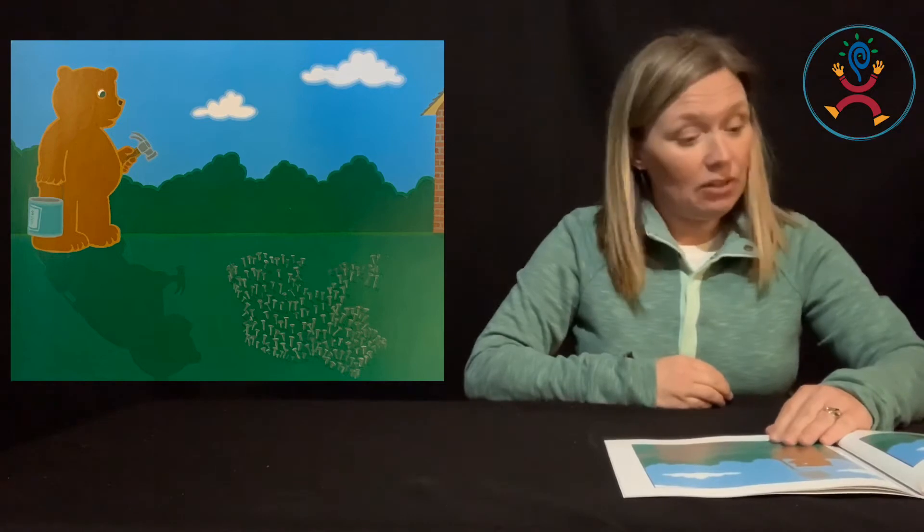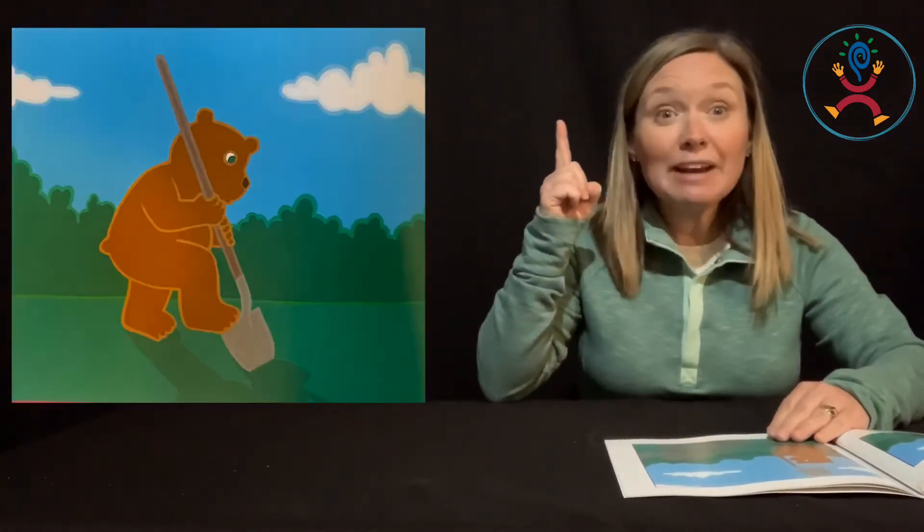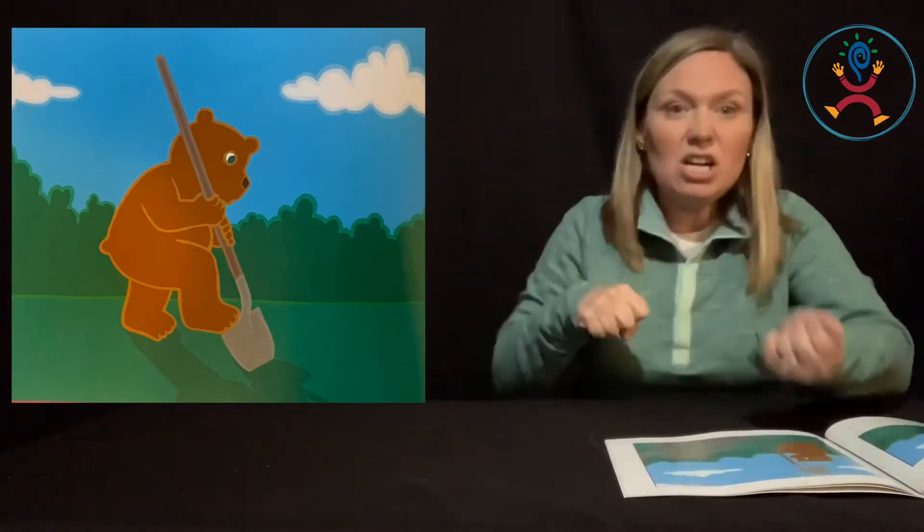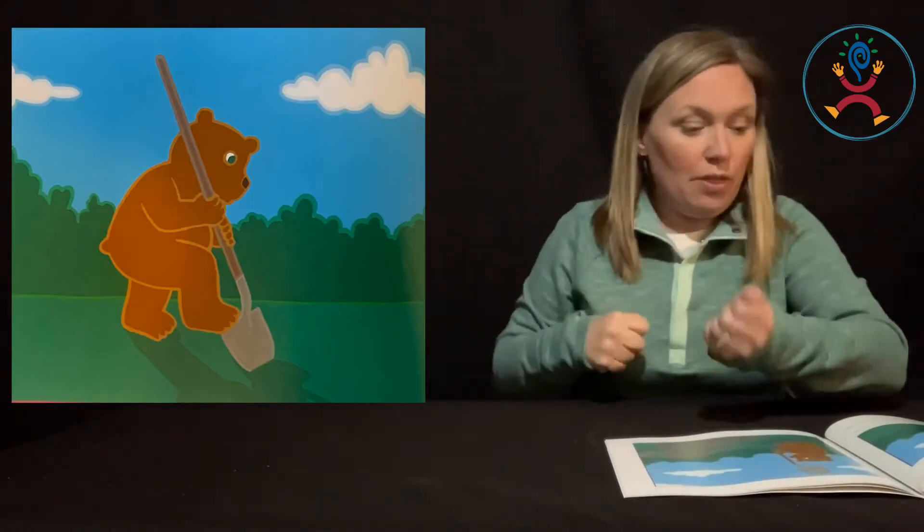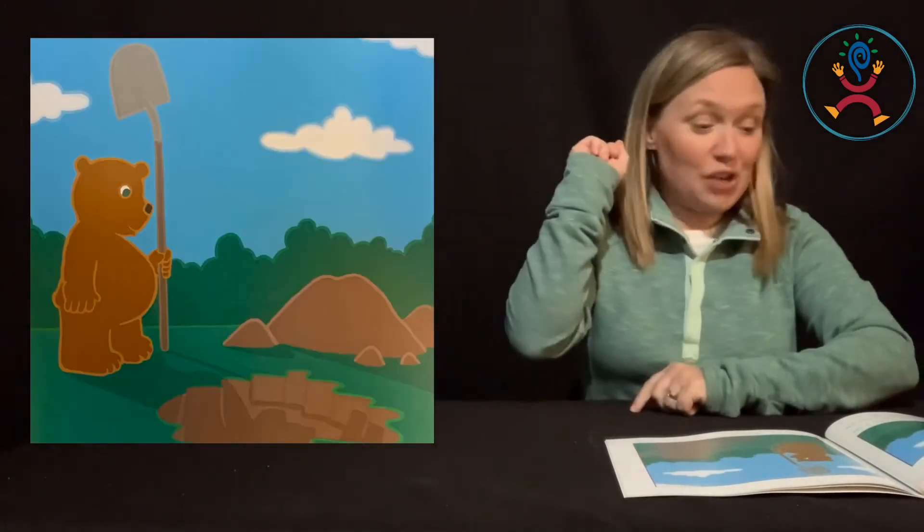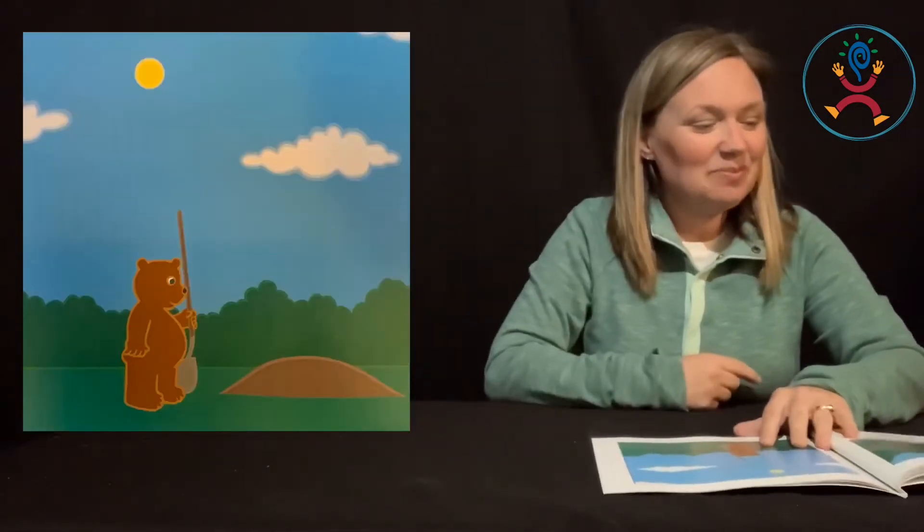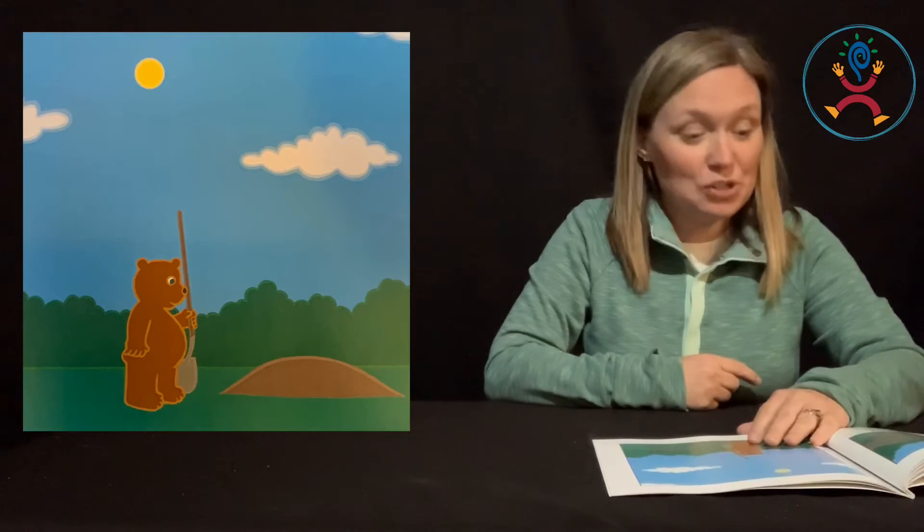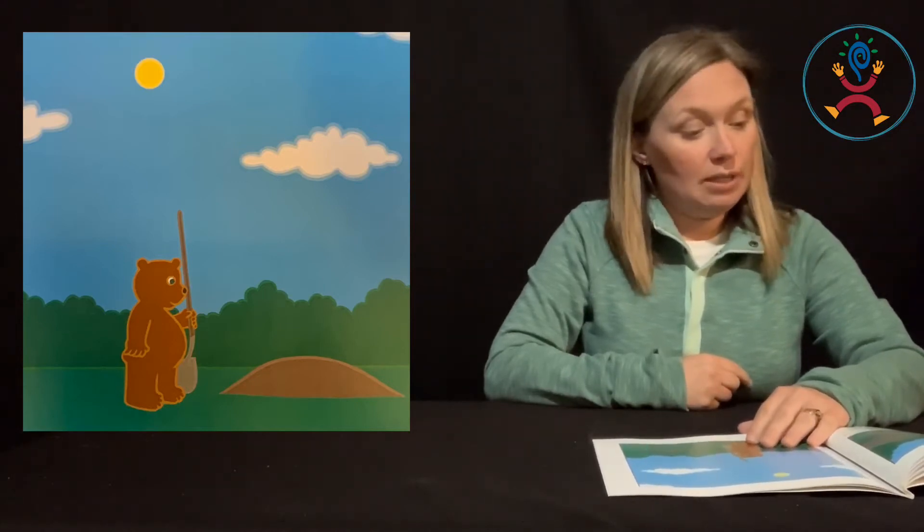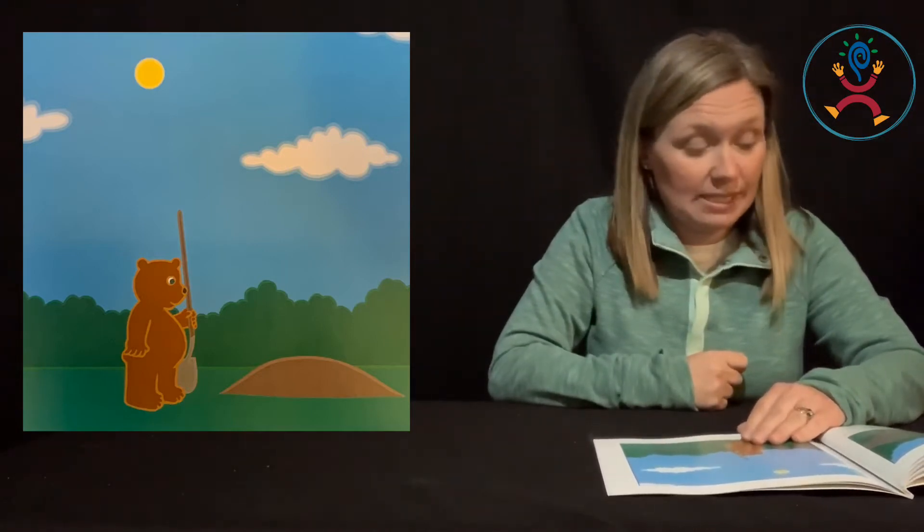If I can't nail him down, thought Bear, maybe I can bury him. So he got his shovel and he dug a hole. When the hole was deep and wide, he let his shadow fall in the hole. Then Bear filled the hole with dirt. When he was finished, it was almost noon. The sun was high in the sky and Shadow was nowhere to be seen.